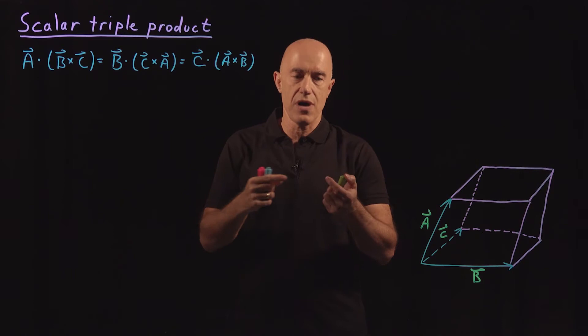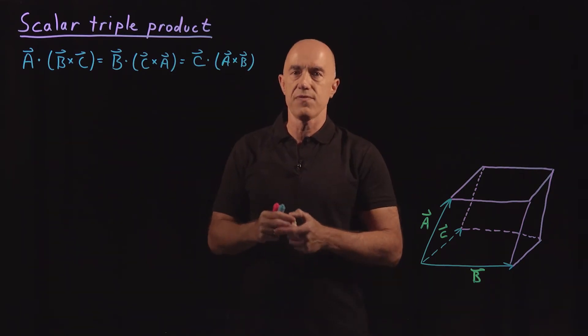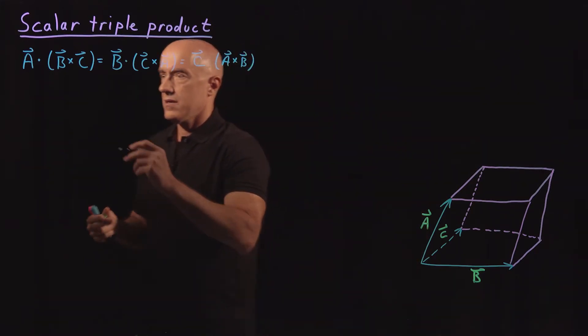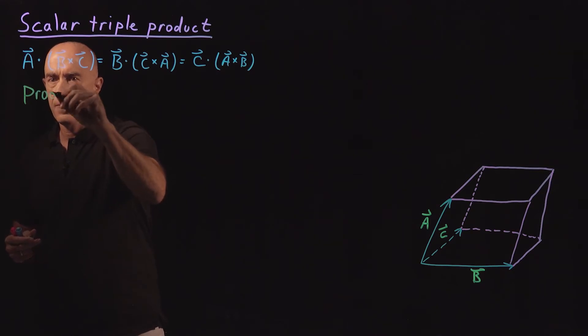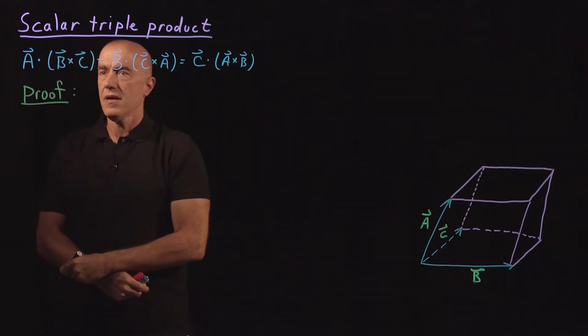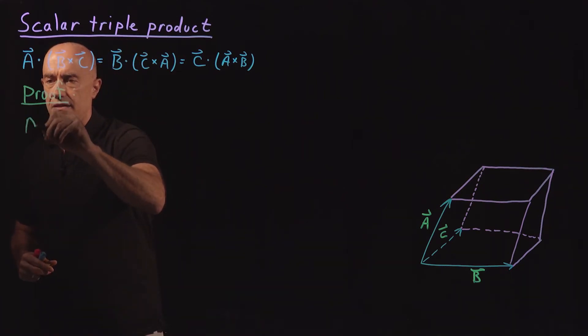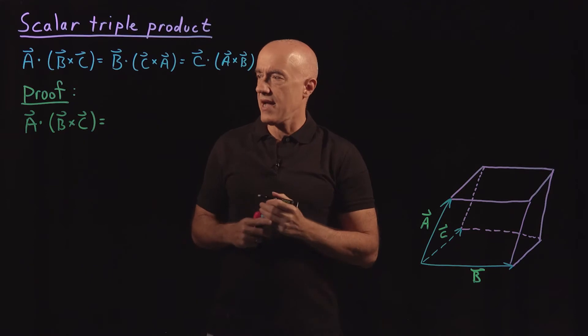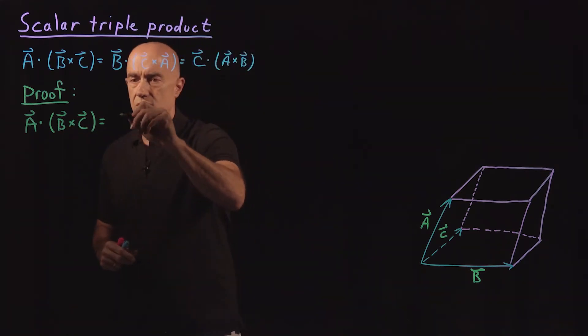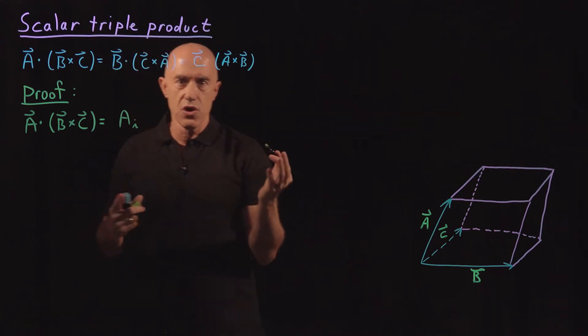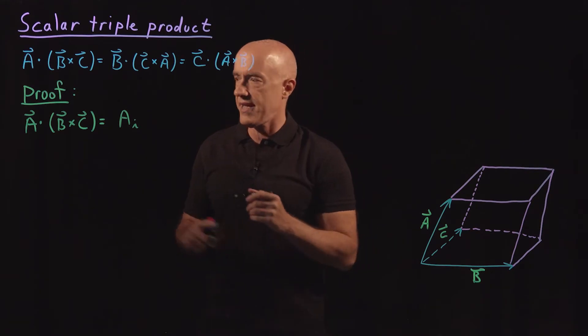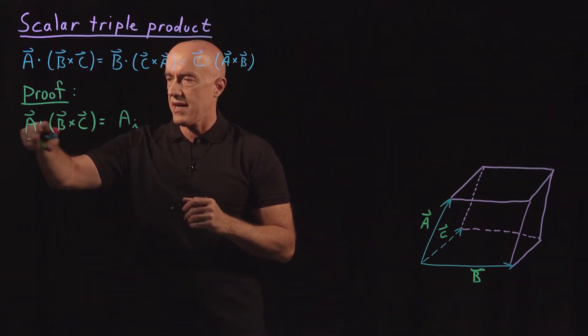So I'll show you, I'll step you through the proof of this using the Levi-Civita symbol. Proof. We start with the left side, so A dot B cross C. We write that using the Einstein Summation Convention.